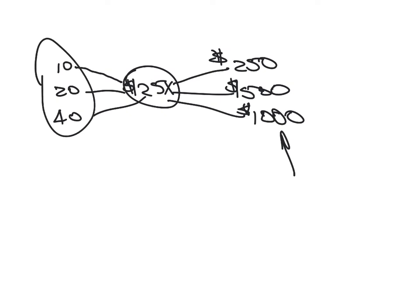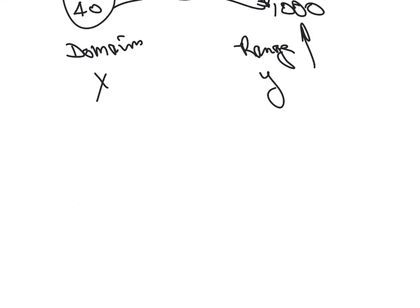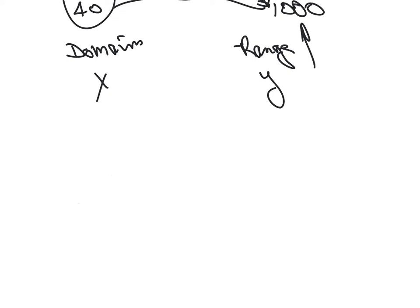This side over here, what we put in is called the domain, and what we get out is called the range. A lot of times what I like to do is say this is the x value, this is the y value. So d is lower in the alphabet than r, x is lower than y. So that's how I keep them straight. d goes with x, r goes with y. So the domain is your input, and your y is your output, what you get when you put it in there.